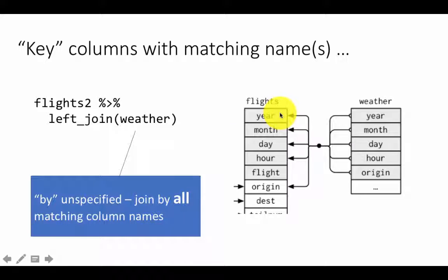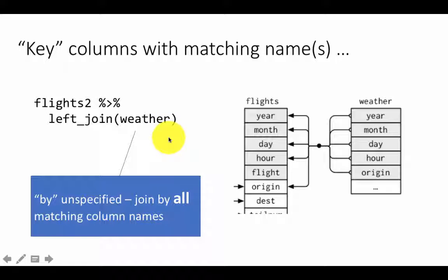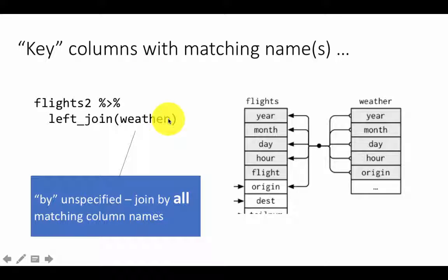If there are any flights for which there is no matching key in weather — since you are doing a left join — those would still appear with all the weather columns being NA. You have to be careful: if you have matching names and want to join, you can leave out `by` and it will join automatically, but you must make sure the matching names mean the same thing. We will shortly see an example where the matching names actually don't mean the same thing.